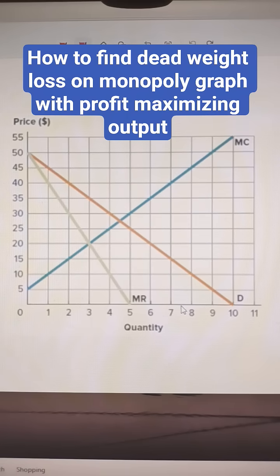We want to find the deadweight loss from a monopoly when they choose their profit maximizing quantity. So profit maximizing happens where marginal revenue equals marginal cost. Then the monopoly is going to mark up that price up to $35.